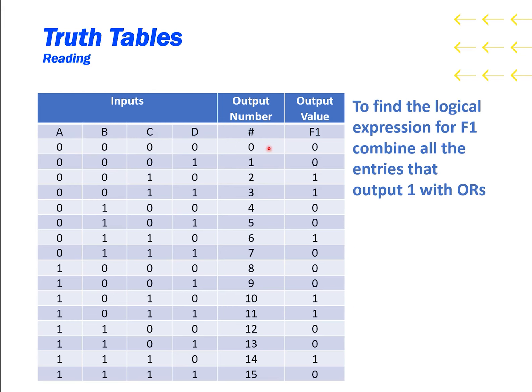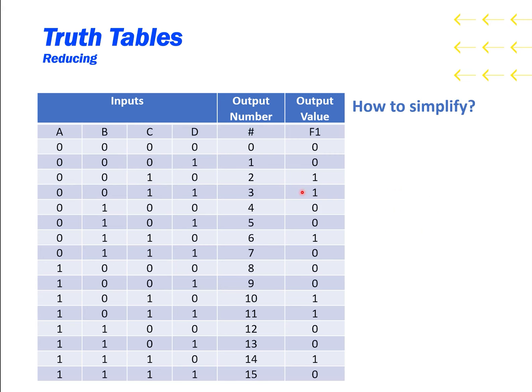To find a logical expression for the function, combine all the entries that output 1 with ORs. You can see that these variables output a 1. That is, A', B', C, and D'. And you can combine this with the rest of the terms that output 1 to find the full function.